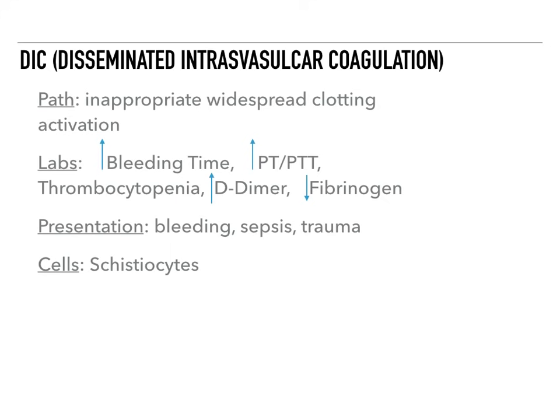Your bleeding time also goes up because platelets go down. So you're clotting everywhere, but you're also bleeding. This usually presents with bleeding from venipuncture sites, and it can happen after a car accident or following a septic infection. The D-dimer is elevated — this is the only bleeding disorder we've talked about where the D-dimer goes up, making it very unique. Fibrinogen goes down because you're consuming it to make those clots. You will see schistocytes as you shear red blood cells with the microthrombi.